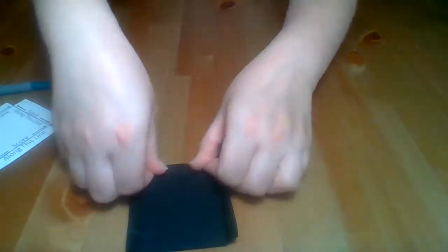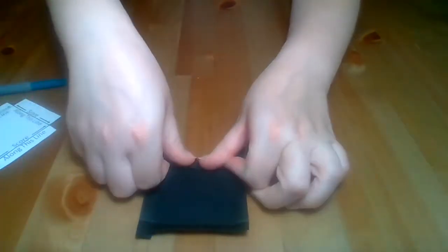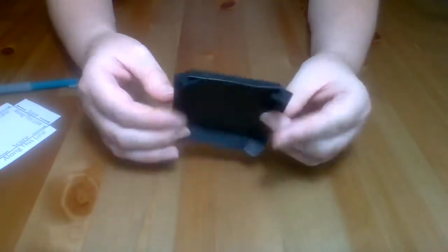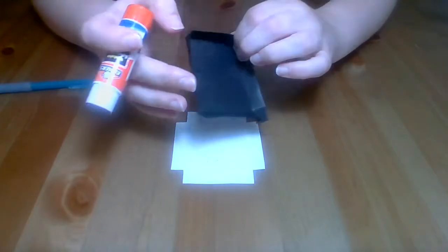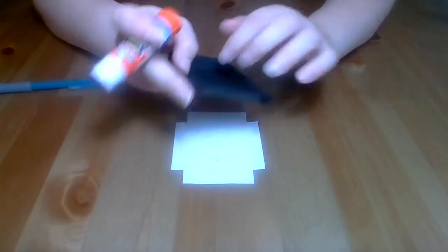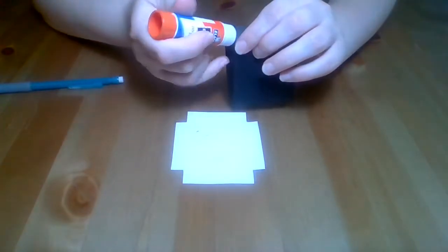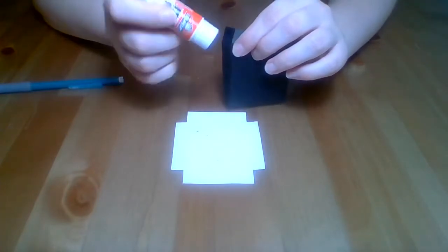Now that each tab is folded, fold the sides of the box inwards. There are no lines, but try to make the folds as even as possible.